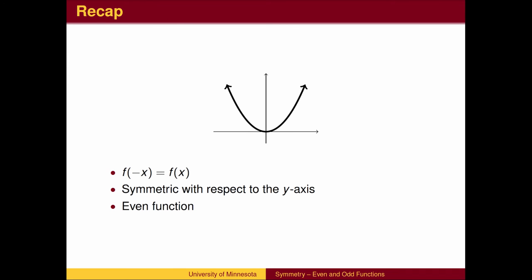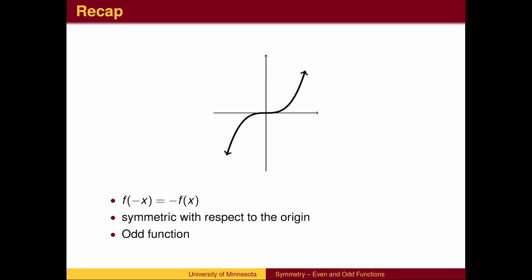To recap: a function which has its left and right branches reflected across the y-axis is said to be symmetric with respect to the y-axis and is called an even function. A function which has its left and right branches pointed in opposite directions is said to be symmetric with respect to the origin and is called an odd function.